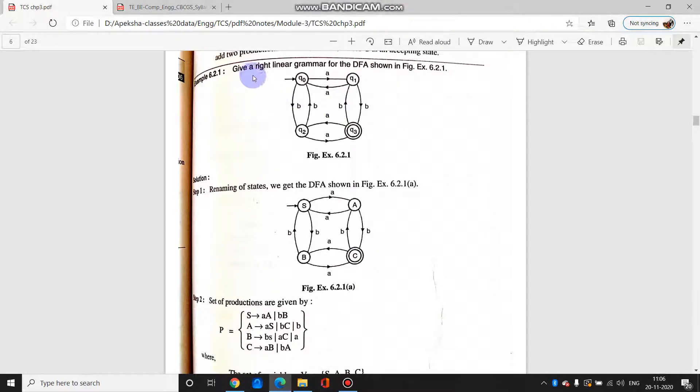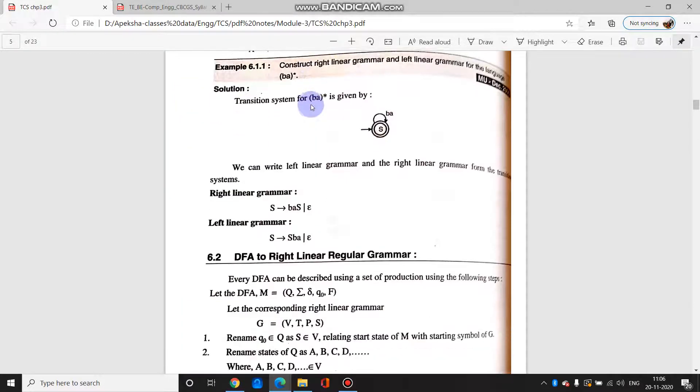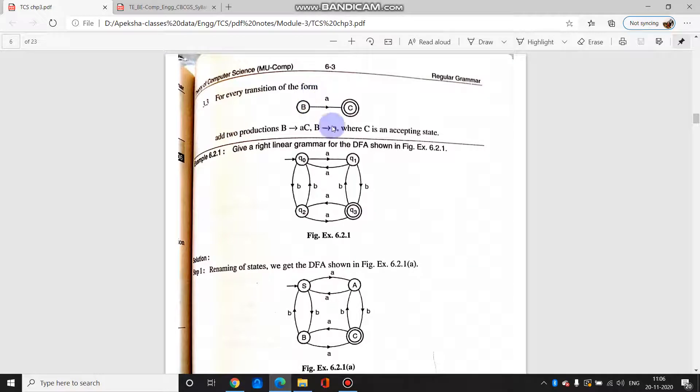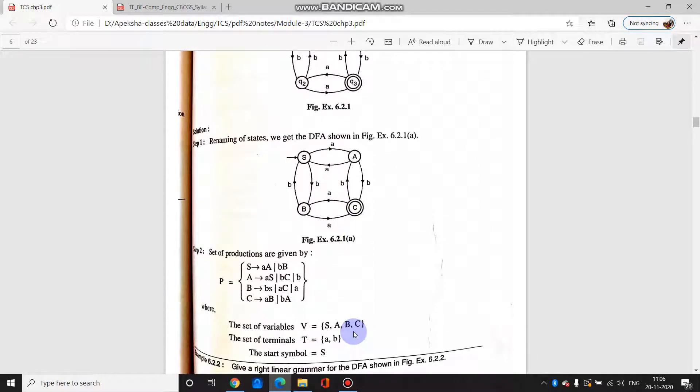The next example is where we are converting DFA to right linear grammar. This DFA is given to you, and from this diagram you have to create right linear grammar. So this is the DFA. First we'll do the renaming of states. This q0 is the initial start state, we've given it s. Then you can label it the way you want. So we have taken here as a, b and c. So if you see, s, a, b and c.